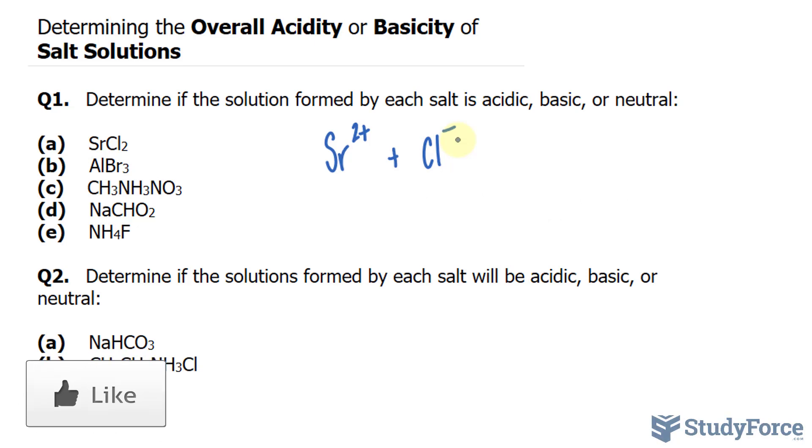Moving on to question B. We have aluminum bromide. So let's write this down. Al3+ plus bromide. And that has a negative charge. Bromine is usually bonded with hydrogen, forming bromic acid, a strong acid.